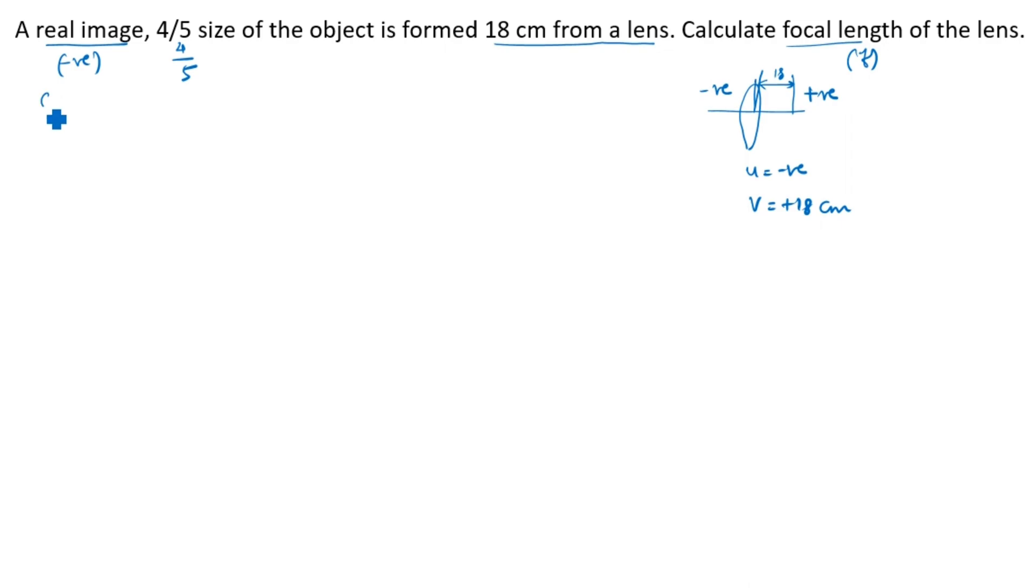Real means always convex. Virtual comes means always concave. Given data: hi/ho is equal to 4/5. What 4/5? Minus real given, right? Real means always negative. V is equal to plus 18 centimeters. Find, what we need to find? F. Solution.